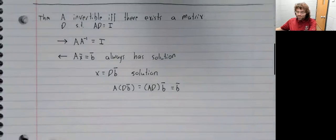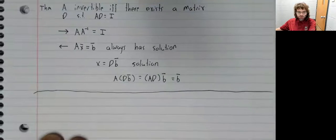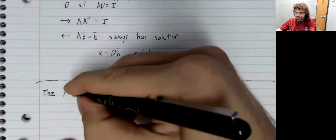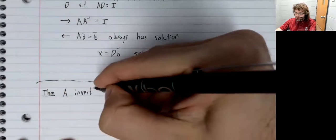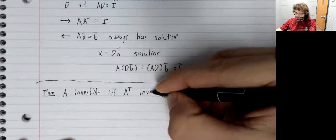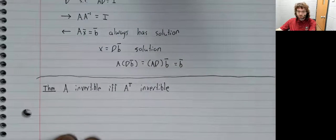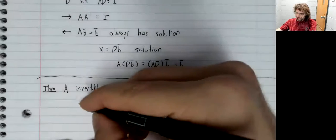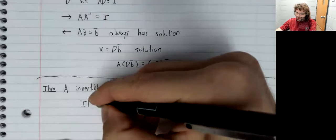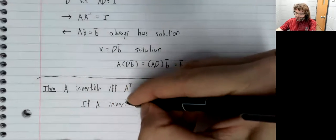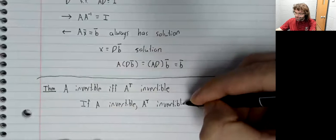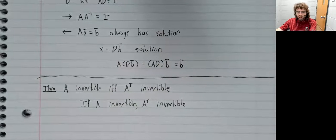One last stray theorem. I won't do a whole lot with transposes in this class, but A is invertible if and only if A transpose is invertible. And the proof we've basically already done. We've made the observation that if A is invertible, A transpose is invertible. So we've already gone in one direction.